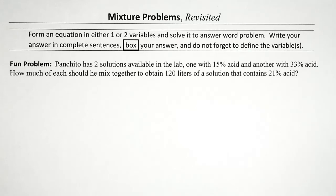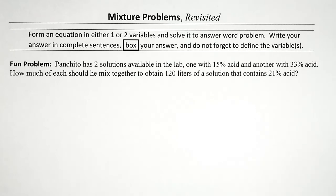Hi guys, so we're going to go ahead and revise the mixture problem unit. We did about four mixture problems in an earlier video. Today we are going to do another mixture problem. The reason being is in case you had a technical difficulty answering this problem with one variable, we are going to do it with two variables. But the first time around we'll do it like in the earlier chapter with one variable, and then we'll do it with two. The directions read: form an equation in either one or two variables and solve it to answer the word problem.